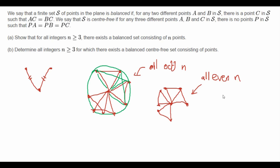Now on to part B. We have to determine all integers N greater than or equal to 3 for which there exists a balanced set that is also center-free. The constructions we just made for part A don't work anymore, because none of them are center-free — except the equilateral triangle for N equals 3, which is trivial. I claim that all odd N still have a solution, but for all even N, this is not possible.